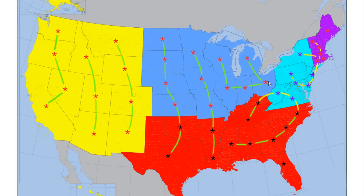And then next, coming to the red, we got the Loop States, beginning with Mississippi, Alabama, Georgia, South Carolina, North Carolina, Virginia, West Virginia, Kentucky, and Tennessee.